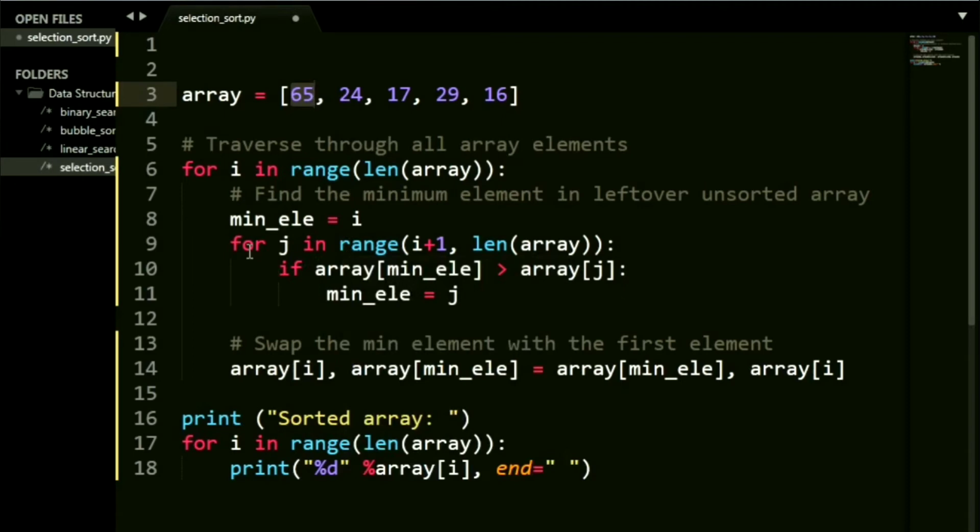That is the inner for loop I had mentioned that we've got to take. So what we say is for j in range i plus one. Obviously yes it has to be i plus one because we are checking every next element. And we iterate until the end of it. So length of it, length of the array. Now if array of minimum element is greater than array of j. So what does that mean? j is basically getting the value one assigned to it in the first pass. So array of zero is greater than array of one. If that is the case then the new minimum element gets overwritten using the value of j. Pretty simple right? So hence in this case in the first pass minimum element becomes 24 from 65.